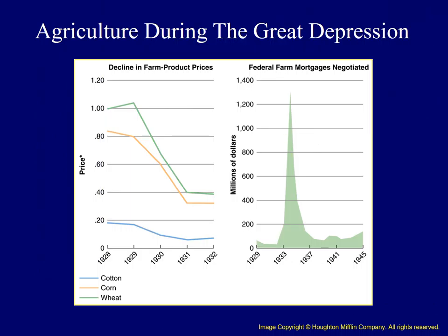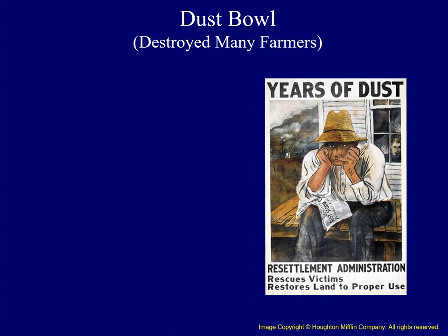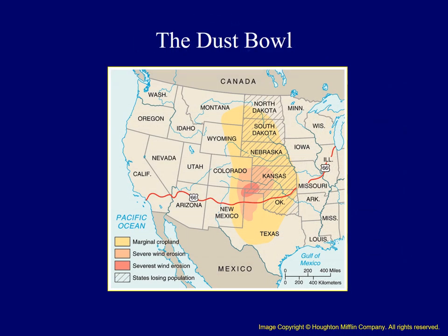These tables provide useful statistics demonstrating the plight facing farmers in the 1930s. On the left, we see a tremendous decline in farm product prices beginning in 1929. On the right, we see the number of farm mortgages that had to be renegotiated. Because of this drop in farm prices, many people lost their farms. Economic disaster was followed by ecological disaster on the Great Plains, as the Dust Bowl destroyed opportunity for many farmers. Lack of rainfall combined with severe soil erosion led to disaster for many American farmers.